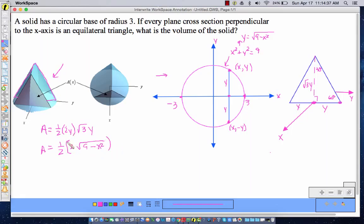I guess I can just do these kind of parentheses times root 3 times. Again, y is square root of 9 minus x squared. And let's simplify that. And one half times 2 is 1. The square root of 9 minus x squared times the square root of 9 minus x squared is 9 minus x squared. So the area turns out to be square root of 3 multiplied by 9 minus x squared.